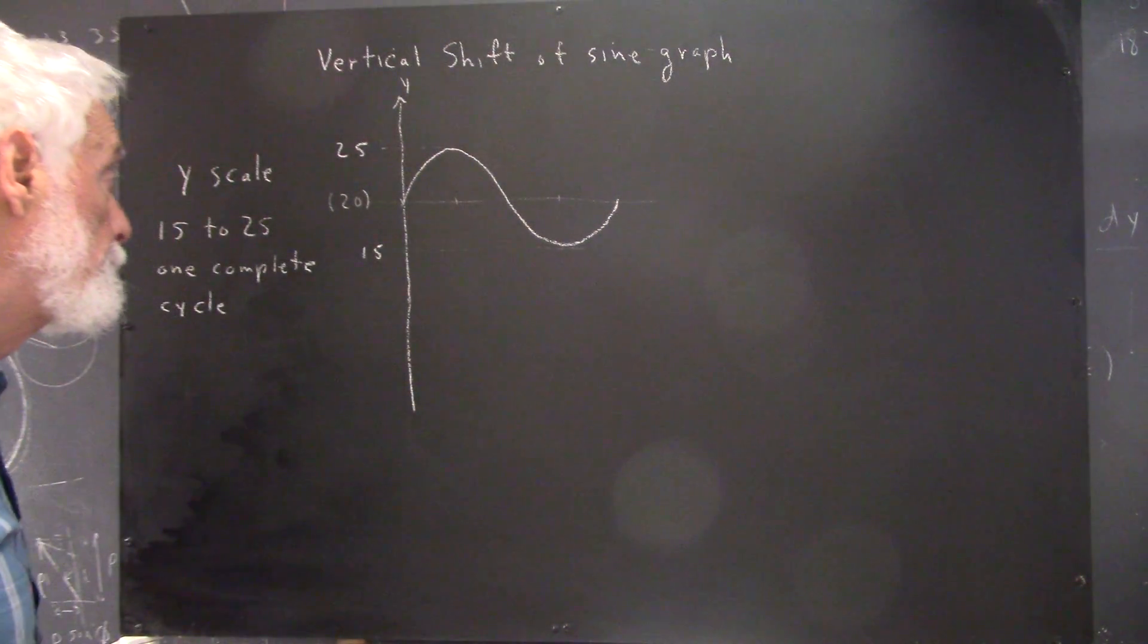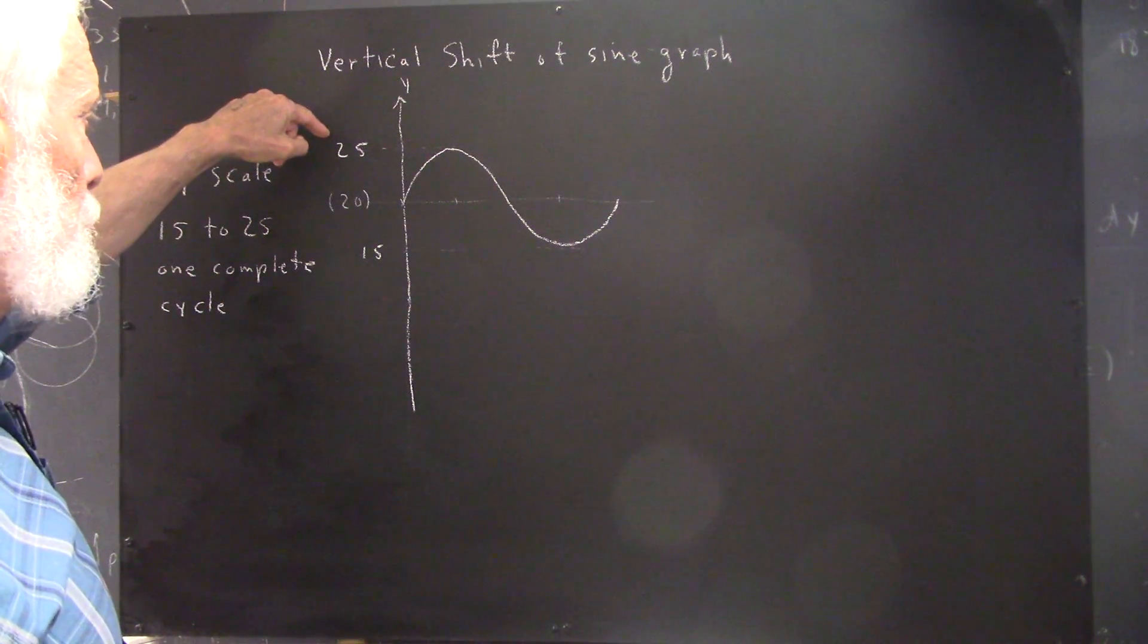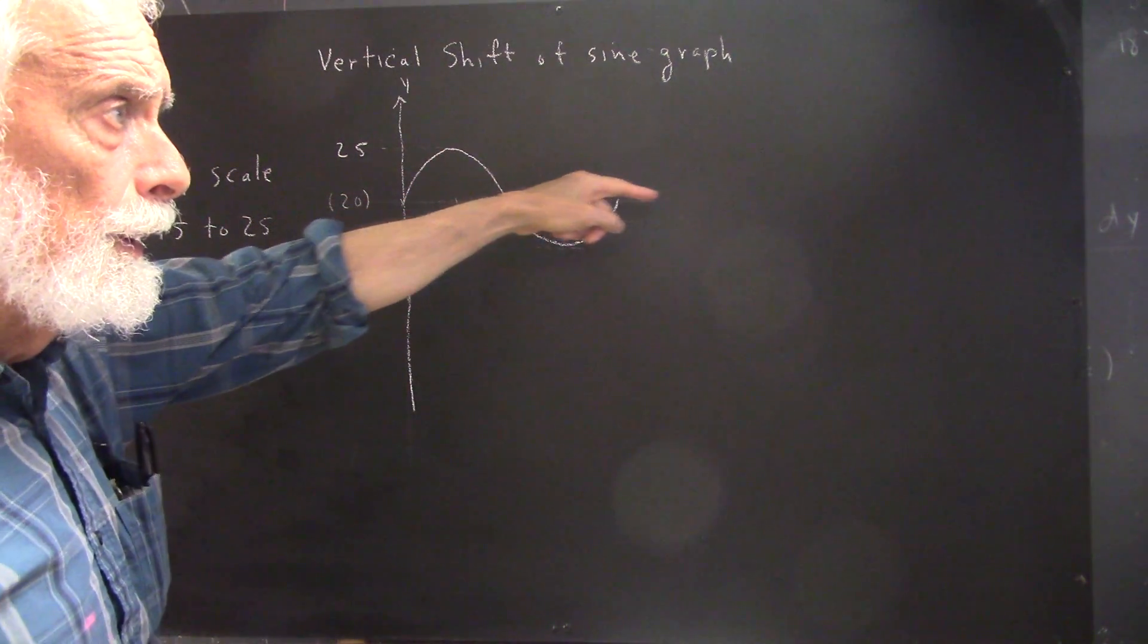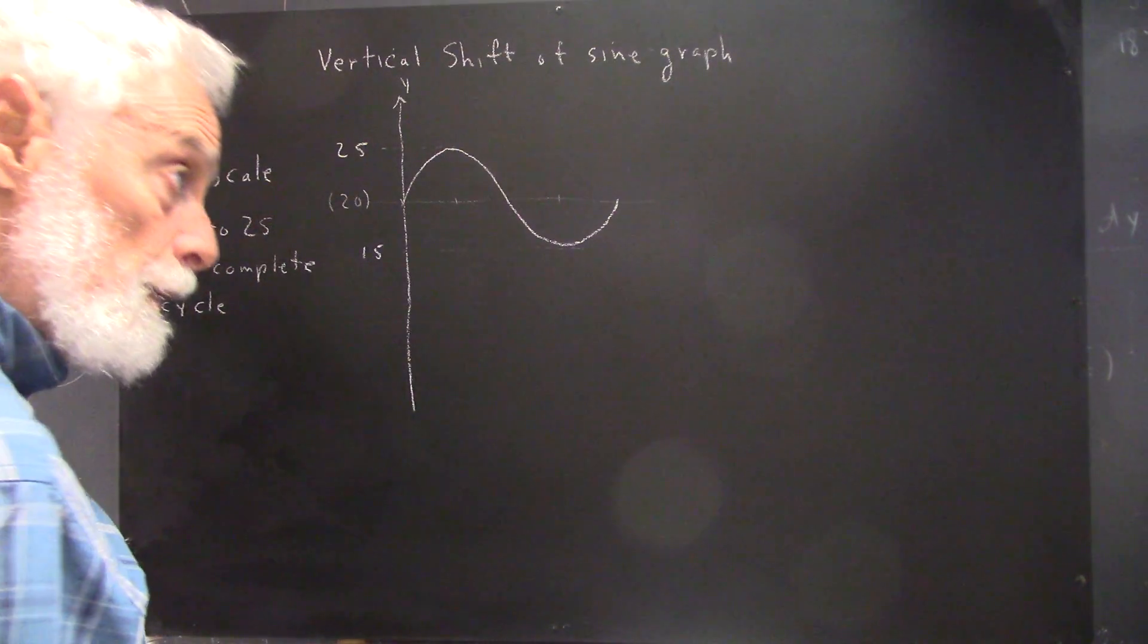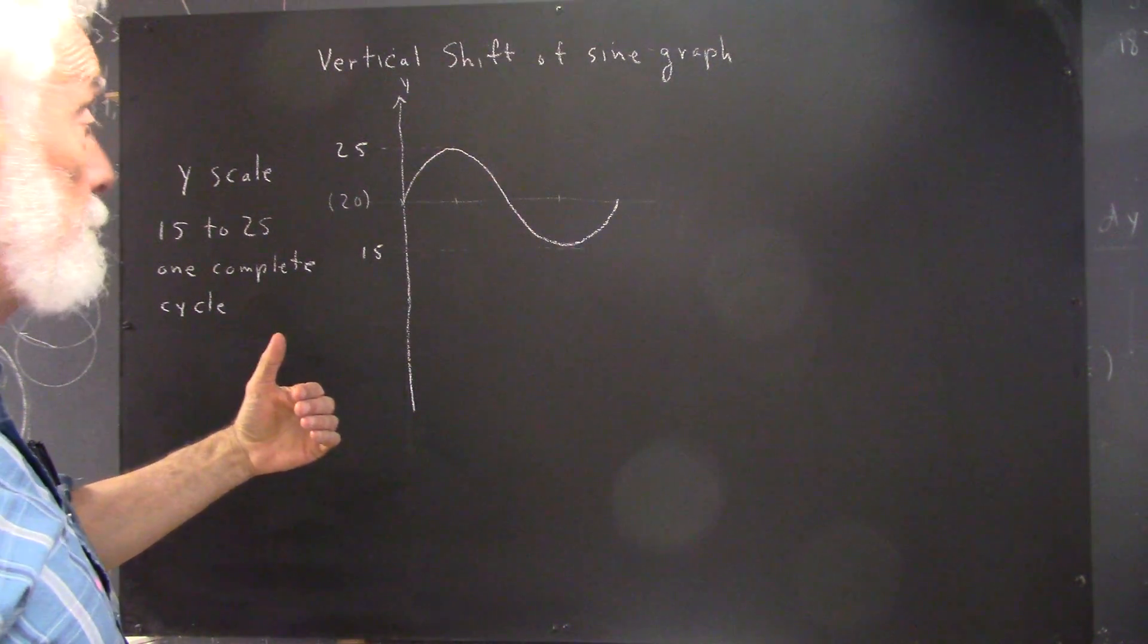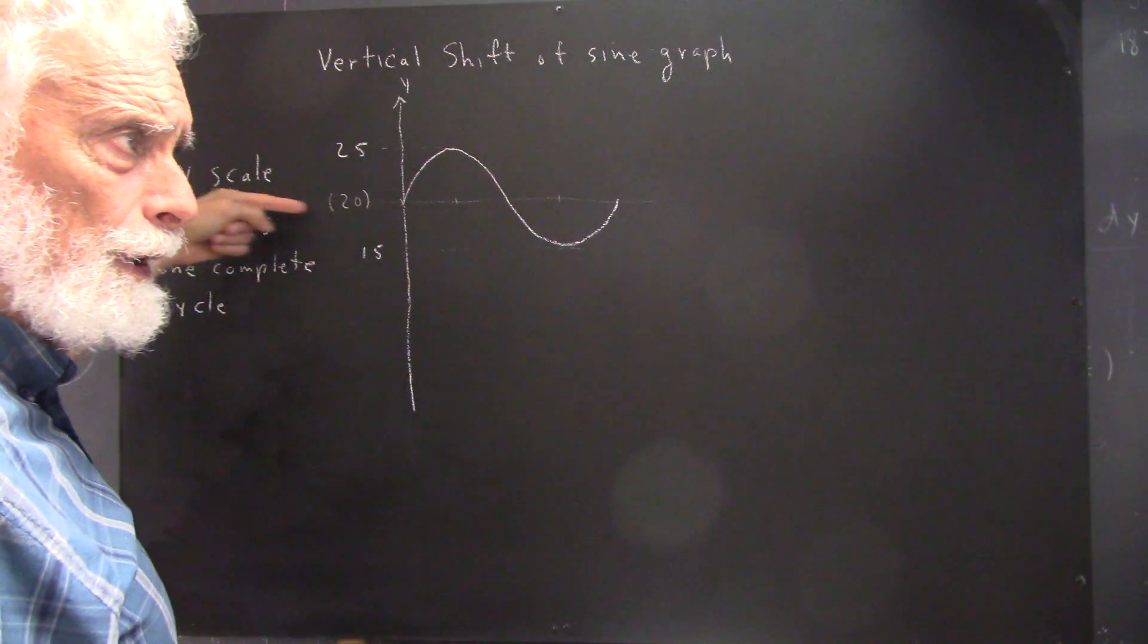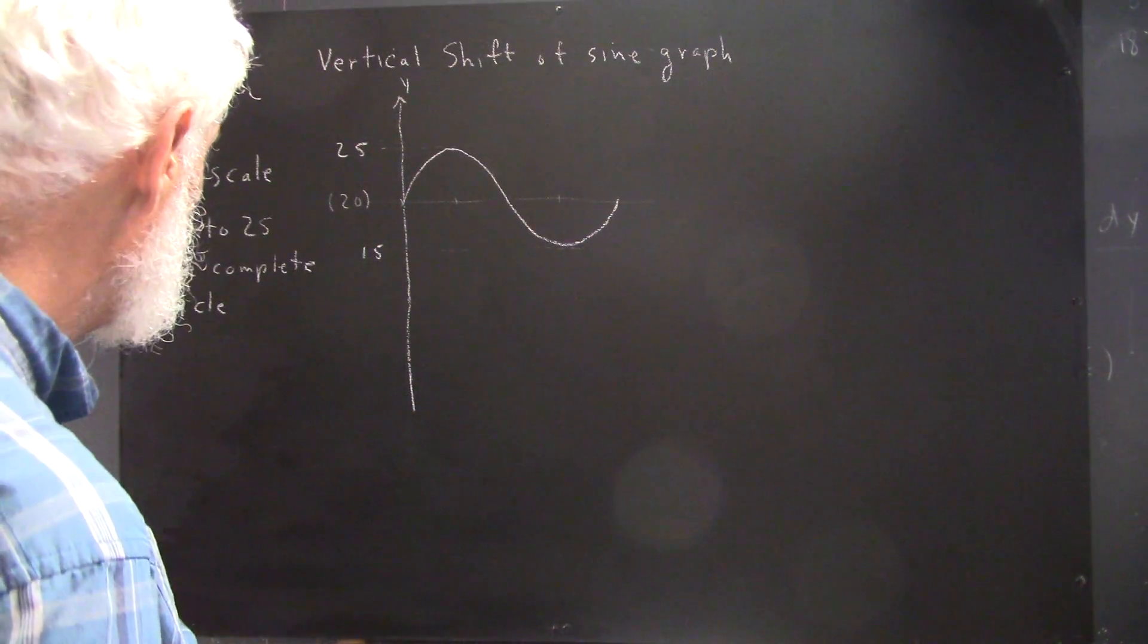In this case, though, we're going from some number to some other number, and y equals zero does not correspond to this line. And remember, if we construct our sine function, y equals zero seems to be identified with this line. So, what are we going to do about this?